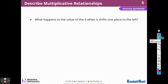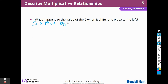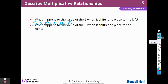What happens to the value of the 6 when it shifts to the left? When it shifts to the left, it's multiplied by 10. What happens to the value of the 6 when it shifts to the right? It's multiplied by 1 tenth, or times one-tenth — or we could say it's divided by 10. It's divided by 10 when it's moving to the right. It's getting smaller.